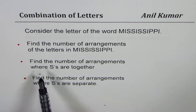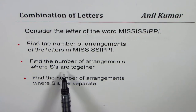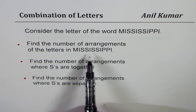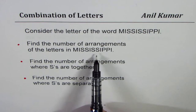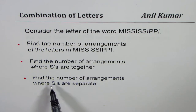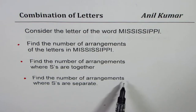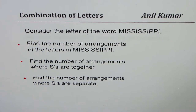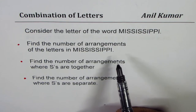Then we have a conditional statement which says: find the number of arrangements where S's are together. In Mississippi, there are four S's, and we want all of them to be together. And the last one is: find the number of arrangements where S's are separate. You can always pause the video, answer the question, and then look into my suggestions. These are based on permutations and combinations, and you may have to review some concepts since I will not get into the very basics.